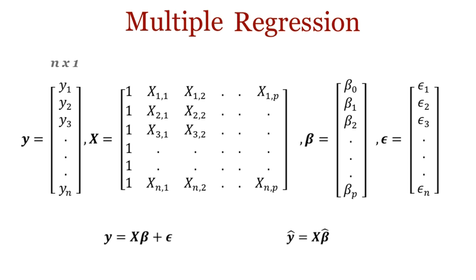Here, y is an n cross 1 matrix, or an n-dimensional column vector. x is an n cross p plus 1 matrix. It's p plus 1 and not p, because of the additional intercept multiplicand which we take as 1. Beta is a p plus 1 dimensional column vector, and epsilon is an n-dimensional column vector.